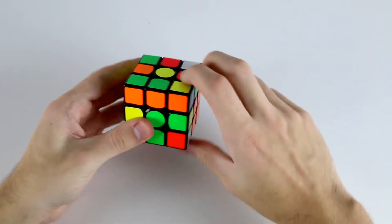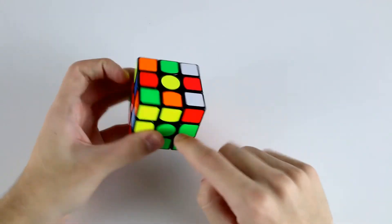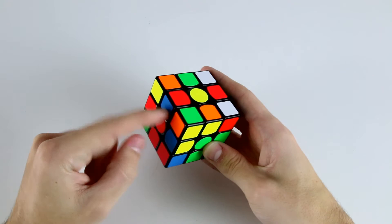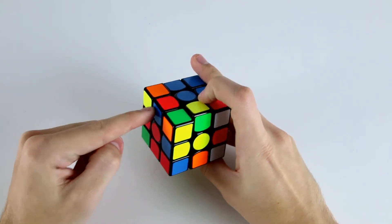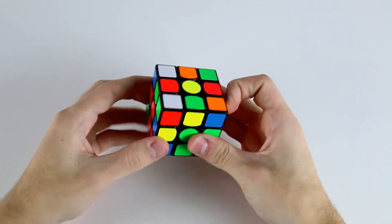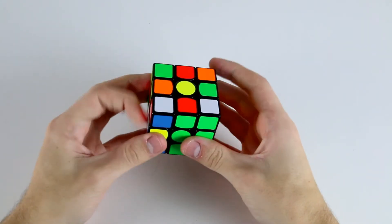When we actually rotate and insert this F2L pair, then these two edges are now misoriented. If we try to insert this one into the back left using L L', it's incorrectly oriented. Similarly, if we try to insert this one using U2 then L, it's misoriented.